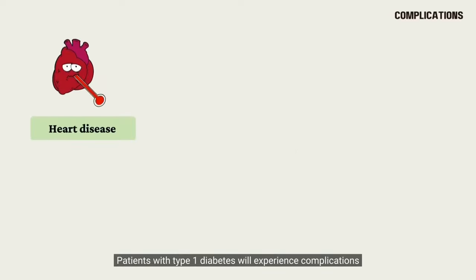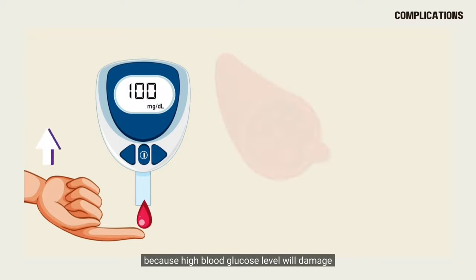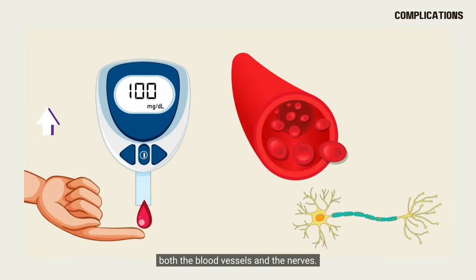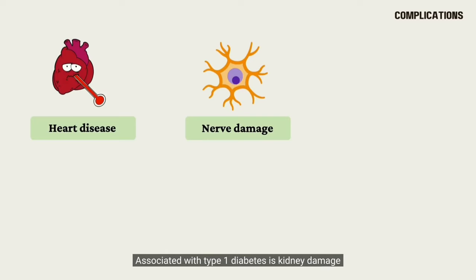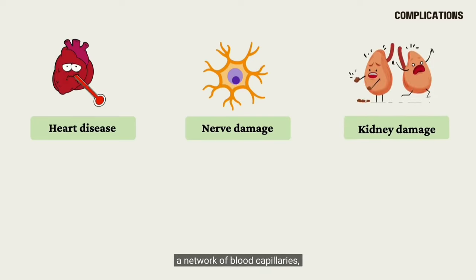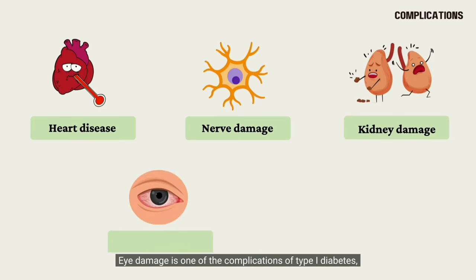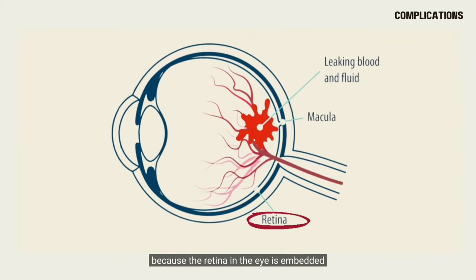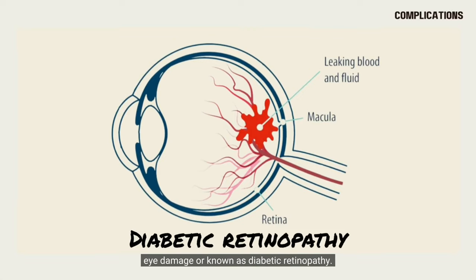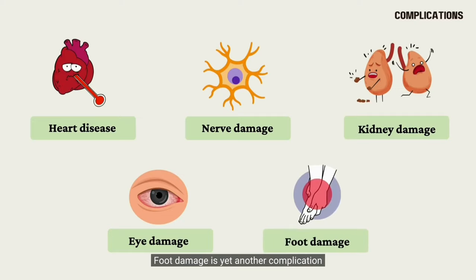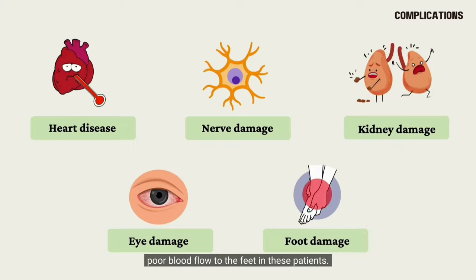Patients with type 1 diabetes will experience complications such as heart disease and nerve damage, because high blood glucose levels will damage both the blood vessels and the nerves. Associated with type 1 diabetes is kidney damage, because the nephron is surrounded by a network of blood capillaries, and damage to these capillaries will cause this condition. Eye damage is also a complication, as the retina is embedded with blood vessels, and damage to these leads to diabetic retinopathy. Foot damage is yet another complication due to nerve damage and poor blood flow to the feet.